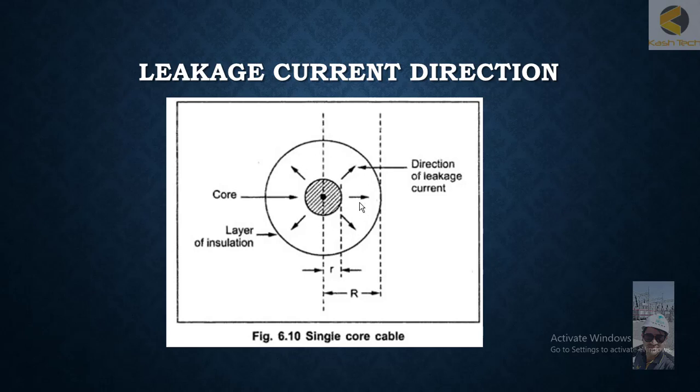The direction of leakage will be from the conductor to the insulation. The leakage current is flowing from this conductor, which is at higher potential, to the ground. Here, the small r you are seeing...